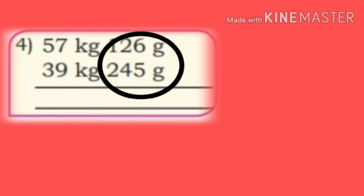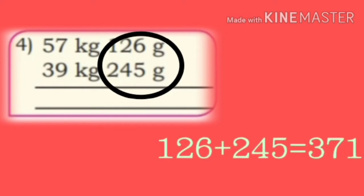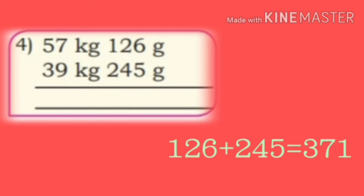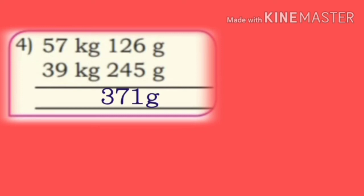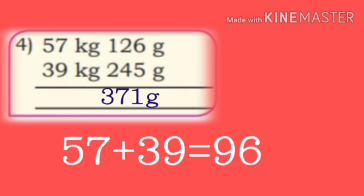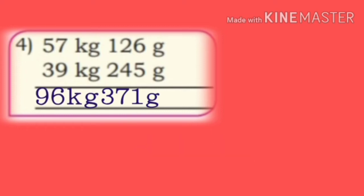Fourth one: 57 kg 126 grams plus 39 kg 245 grams. First we add grams: 126 plus 245 is 371 — write in grams place. Now add kilograms: 57 kg plus 39 kg is 96 kg.